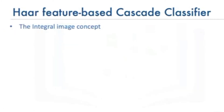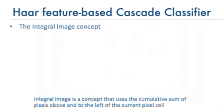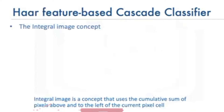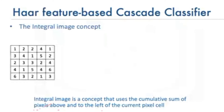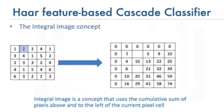The integral image concept: each pixel represents the cumulative sum of the corresponding input pixels above and to the left of that pixel. The concept takes in the pixels of an input image, and to get the integral sum for the highlighted pixel, we add everything to the left and to the top. Since there is nothing to the left and top, we get a sum of 1 just by adding itself.